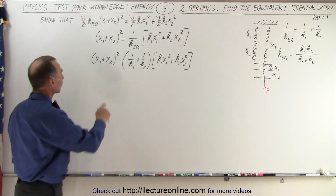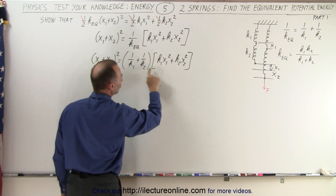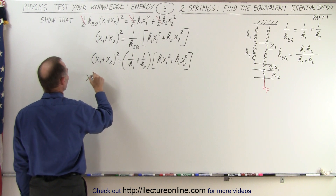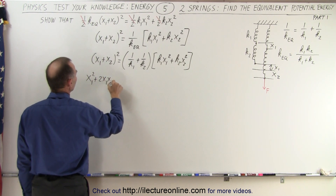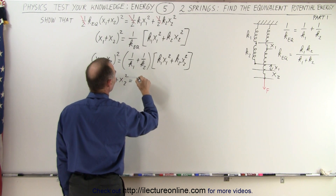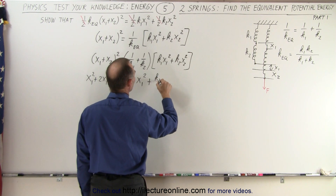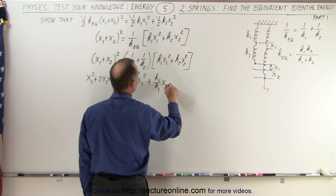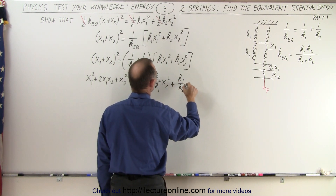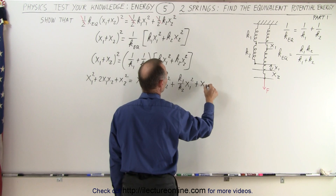Next we multiply all this out using the distributive property: 1/k1 times everything plus 1/k2 times everything. On the left side we get x1² + 2x1x2 + x2². On the right side: 1/k1 times k1·x1² gives x1²; 1/k1 times k2·x2² gives k2/k1·x2²; 1/k2 times k1·x1² gives k1/k2·x1²; and 1/k2 times k2·x2² gives x2².